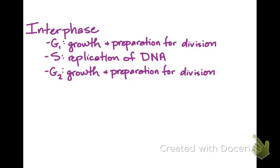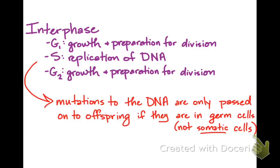If the DNA is mutated, those mutations will only be passed on to offspring if they're in the germ cells - and those are the cells destined to become reproductive cells. What we're talking about in